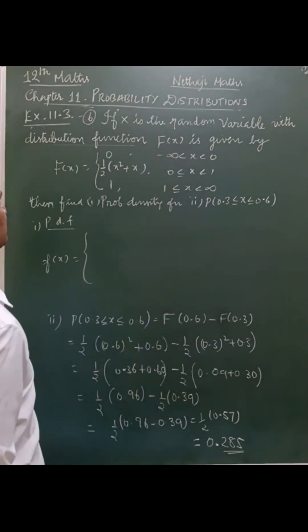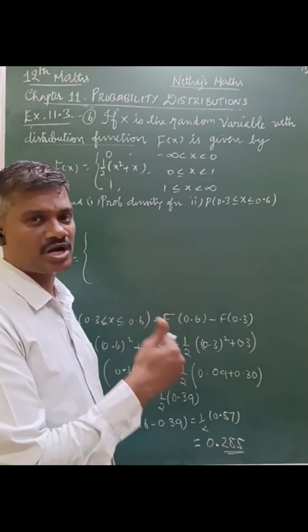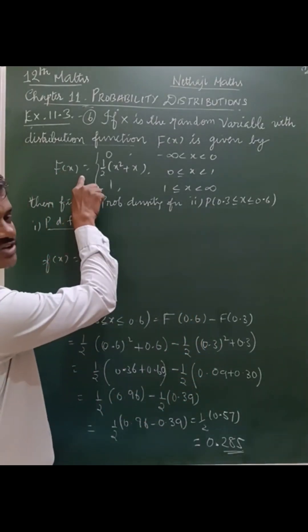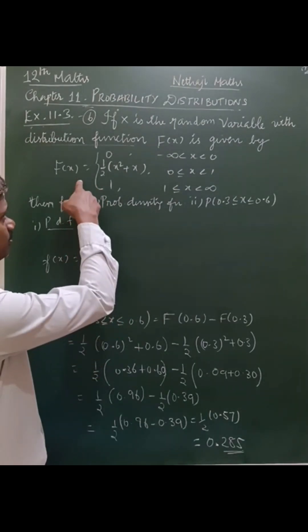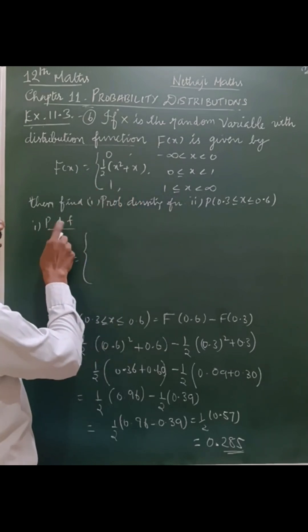If you have capital F(x), that is cumulative distribution function, and you want to find the PDF, that is probability density function, small f(x), then small f(x) is given by differentiating capital F(x). That is the relationship between cumulative distribution function and probability density function.